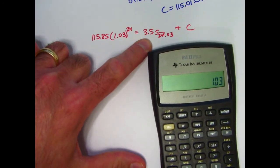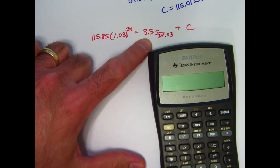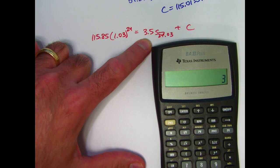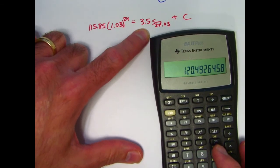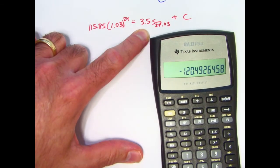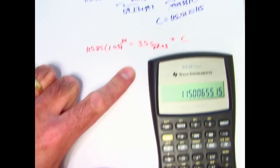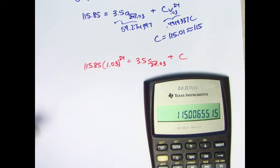For this one, do 1.03 to the 24th, minus 1, divide by 0.03, times 3.5. I won't bother storing that. I will just subtract it from what's in register 1 to get, once again, $115.01, probably rounded on a multiple choice exam to $115.